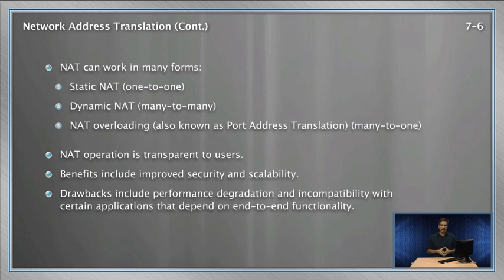Dynamic NAT maps an unregistered IPv4 address to a registered IPv4 address from a pool of registered IPv4 addresses. This is a many-to-many relationship configuration.